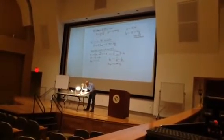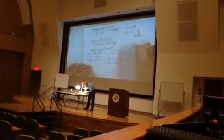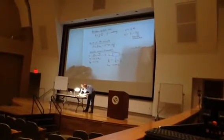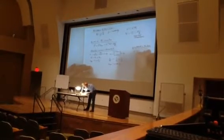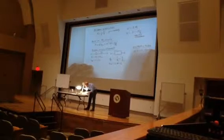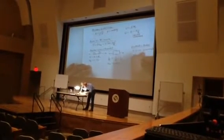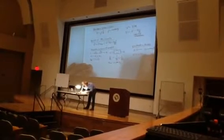So that leads us to Kirchhoff's rules, which are rather simply stated. The sum of I equals zero, which is the junction rule, and the sum of V equals zero, which is the loop rule.